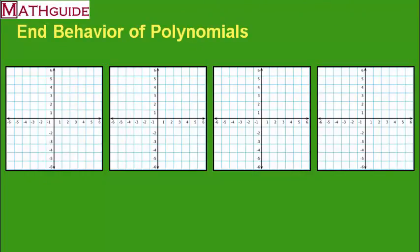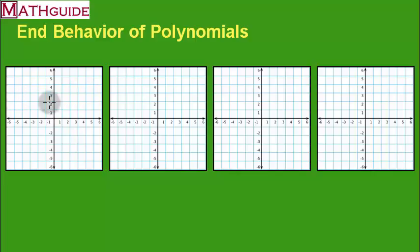Four coordinate planes have been placed on the screen because when we refer to polynomials and look at their graphs, four possibilities can exist. When we talk about end behavior — what could happen on the right side of the graph and what can happen on the left side — I'm not really concerned about what happens in the middle of the graph.